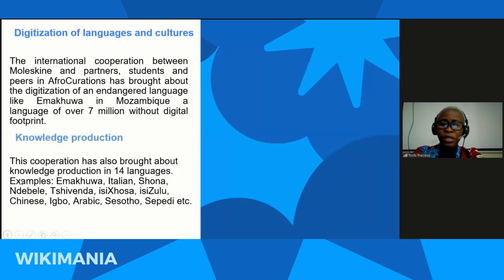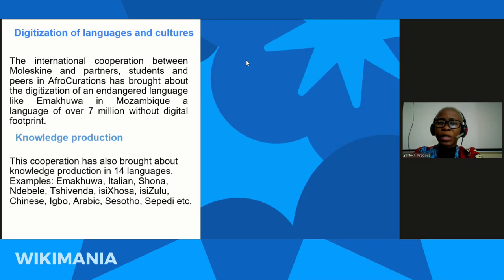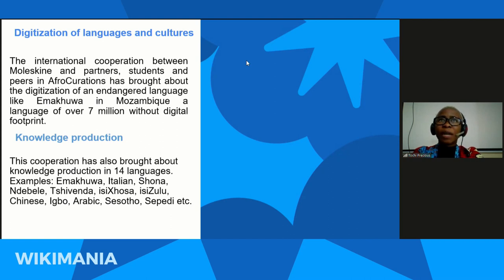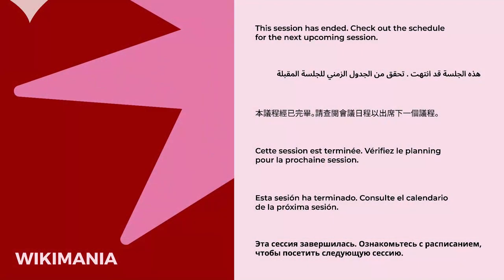Achievements from the various collaborations included digitization of languages and cultures. The international cooperation between Morskine, the partners, students, and players in Afro-Curation brought about digitization of the endangered language Emakua in Mozambique. Emakua is a language spoken by 7 million people that had no digital footprint, making it difficult to find anything written about it online.